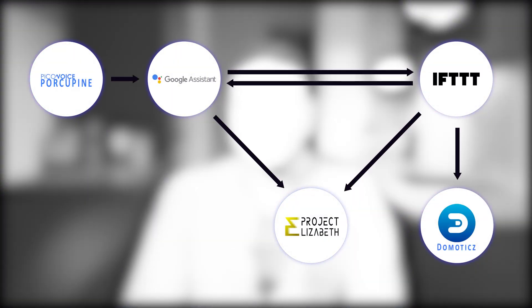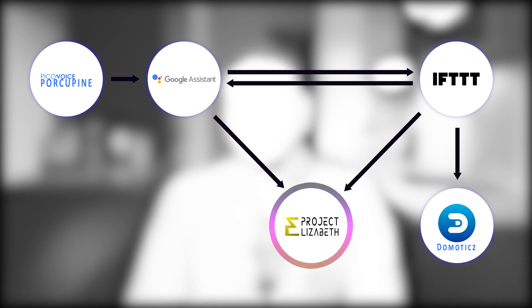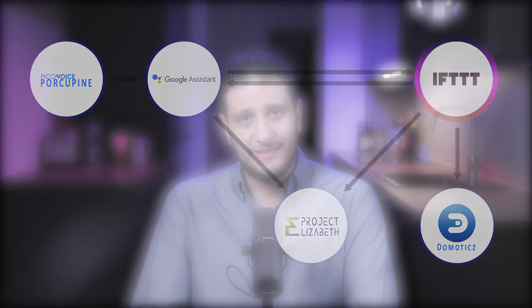Okay, enough joking around. This is an overview of the services and data paths I'm using and what we're talking about today. Porcupine is a local hot word detector — it runs locally, so no internet involved. Google Assistant you are already familiar with. Domotix is a home automation software, and Project Elizabeth is our mirror. IFTTT stands for 'If This Then That,' which is kind of self-explanatory. It's an online applet service which will trigger actions and commands depending on what conditions and rules you set up in your applets.